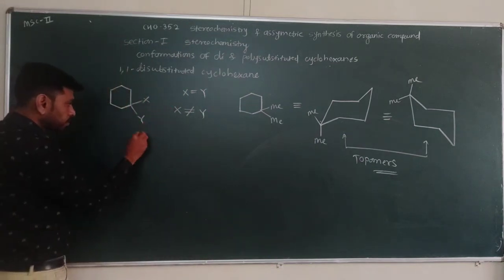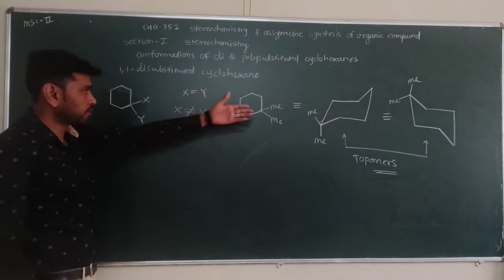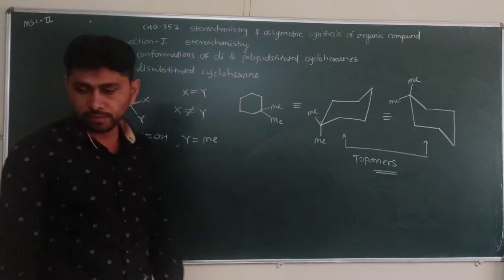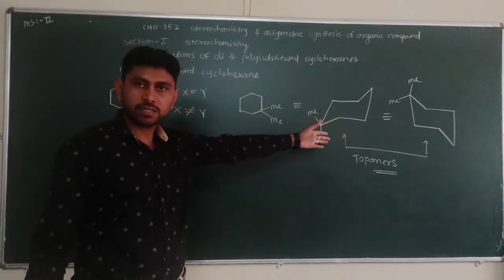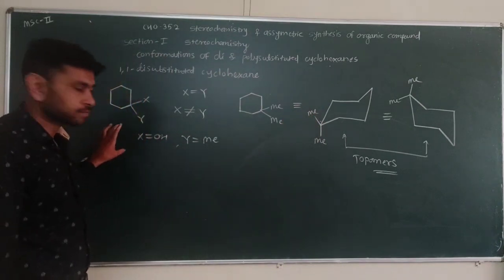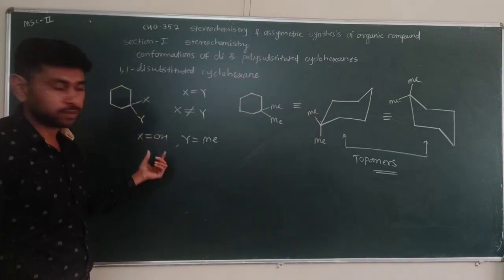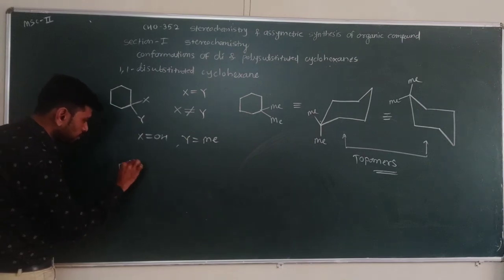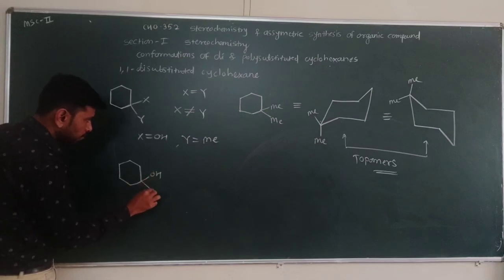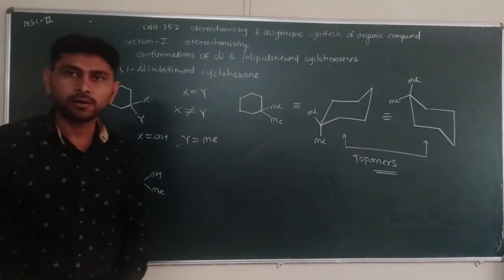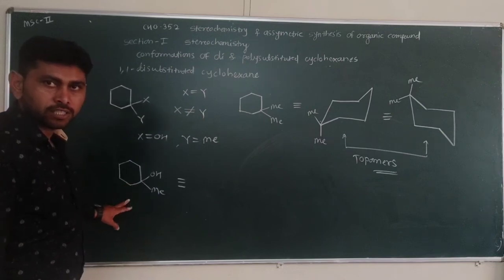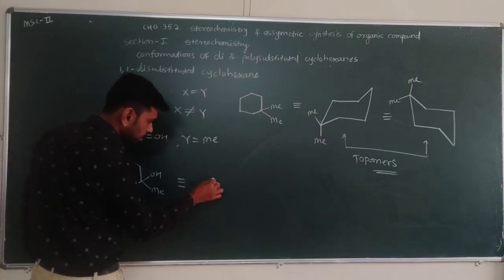Let's see another example where instead of same groups we have two different groups. Here we change: X is equal to OH and Y is equal to methyl group. So we have OH group and methyl group at carbon number 1. The stability of both chair conformations is the same in case of topomers, but when we change the groups to two different groups, we have to draw the chair conformation for this planar structure.